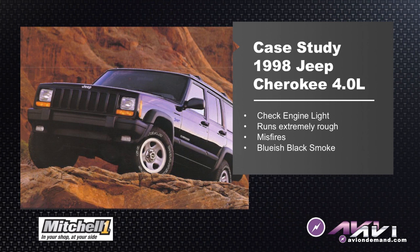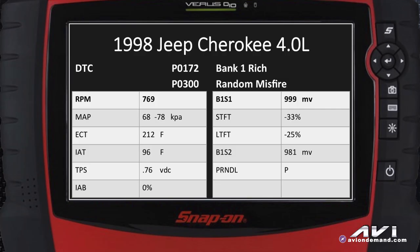Extremely rough running engine with misfires occurring and kind of a bluish to black smoke coming out the tailpipe. We started our diagnostic routine, looked at some scan data and trouble codes, and found a PO-172 bank one rich — meaning the fuel trims are negative — and PO-300 random misfires.